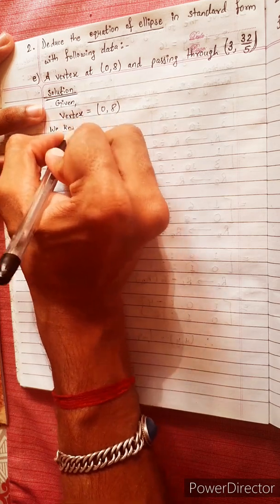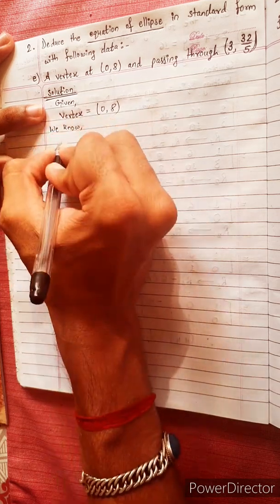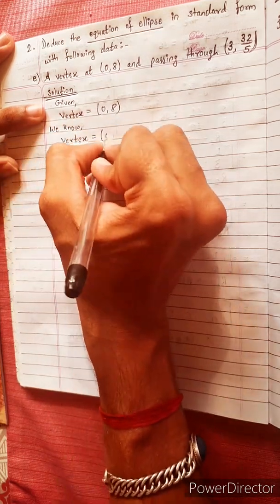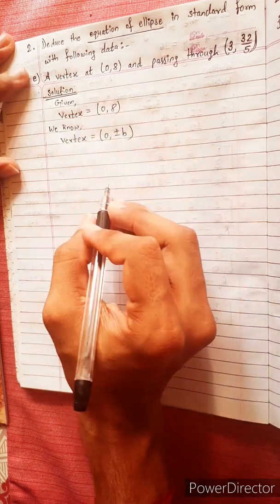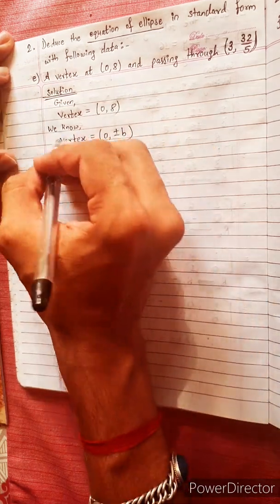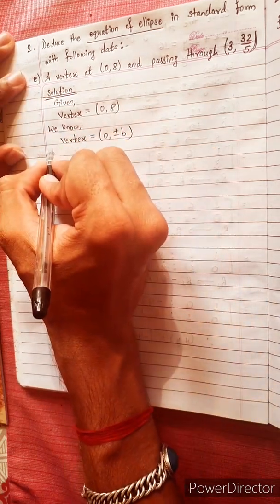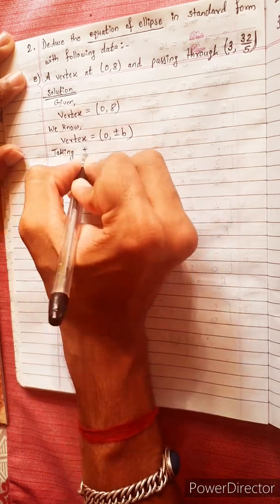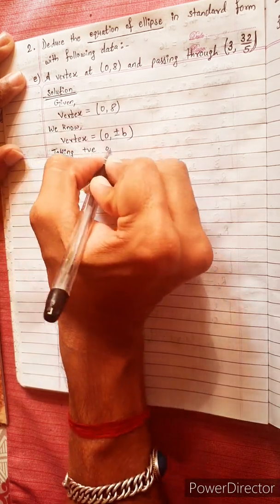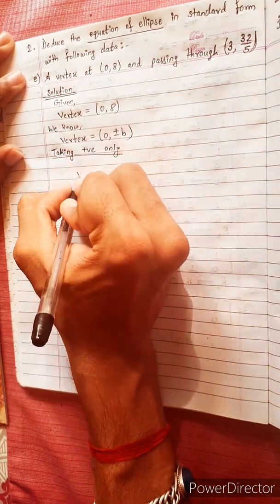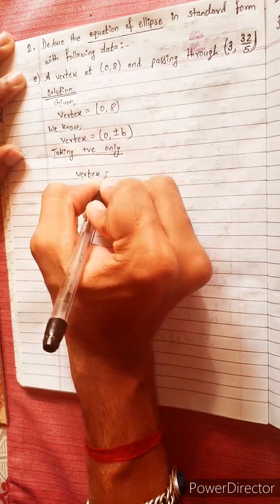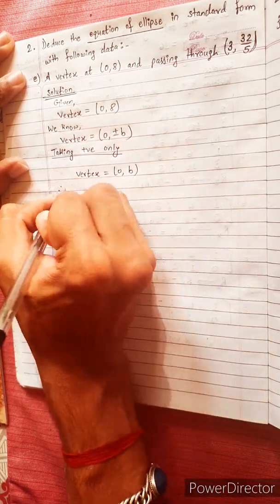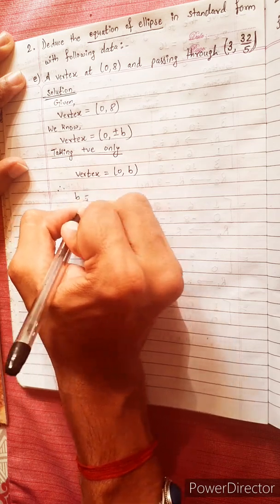We know the formula. The vertex of an ellipse is given by (0, ±b). Taking positive only, vertex equals (0, 8), therefore b equals 8.